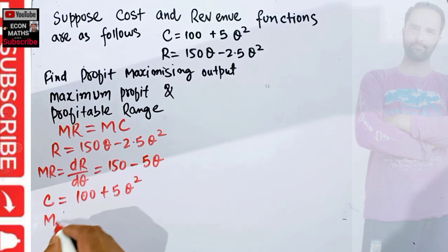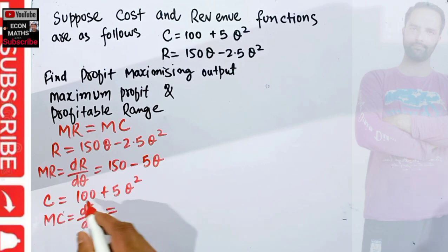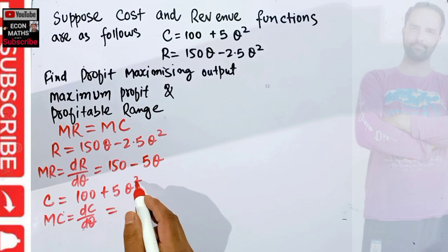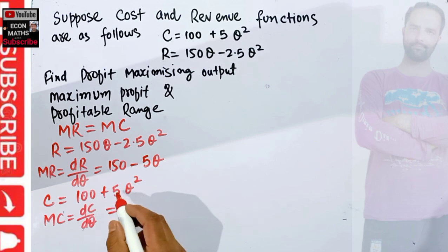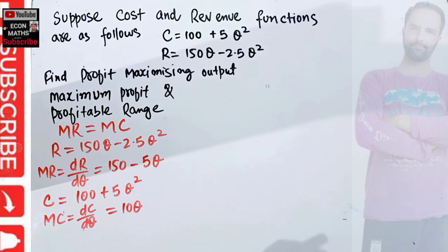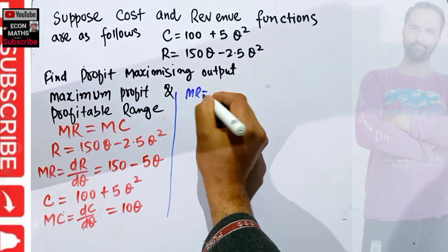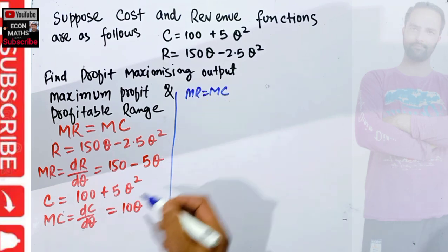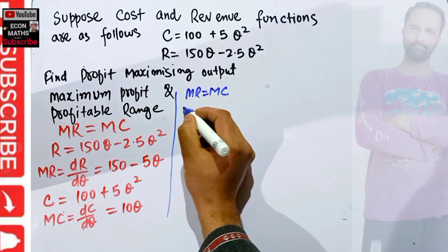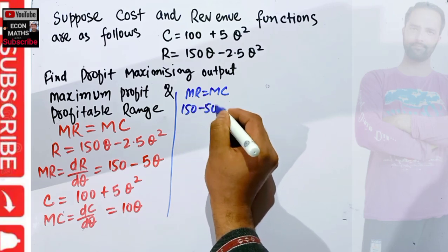Our cost function is C = 100 + 5Q². Marginal cost is the derivative of the cost function with respect to output. The derivative of the constant 100 is 0, and the derivative of Q² is 2Q, so 2 × 5 = 10Q. Therefore, marginal cost MC = 10Q.